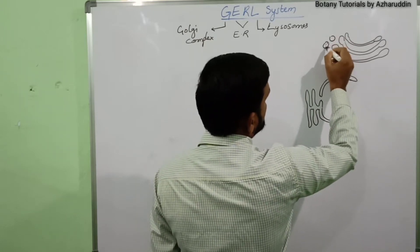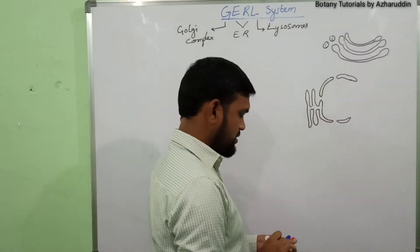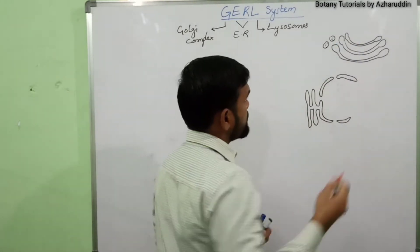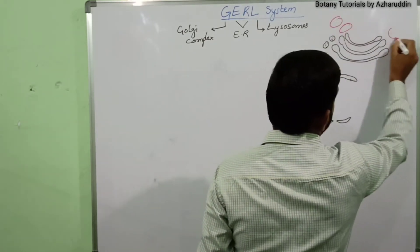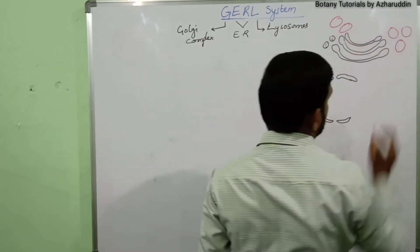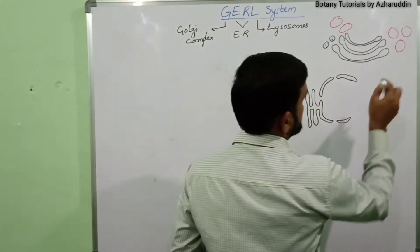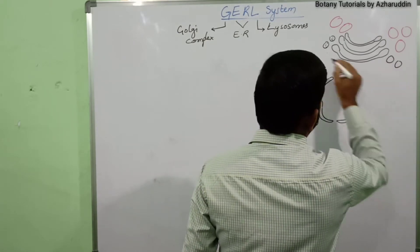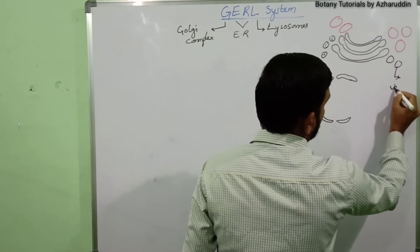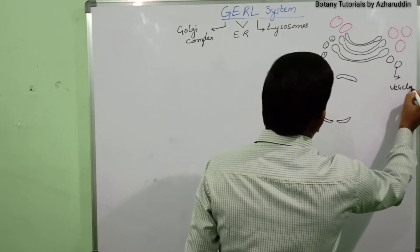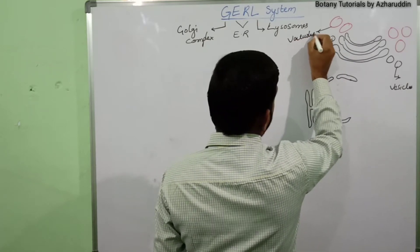At the ends of the Golgi bodies, small sized structures are called vesicles and large sized structures are known as vacuoles. These red colored structures are called vacuoles, and the small sized structures are known as vesicles.